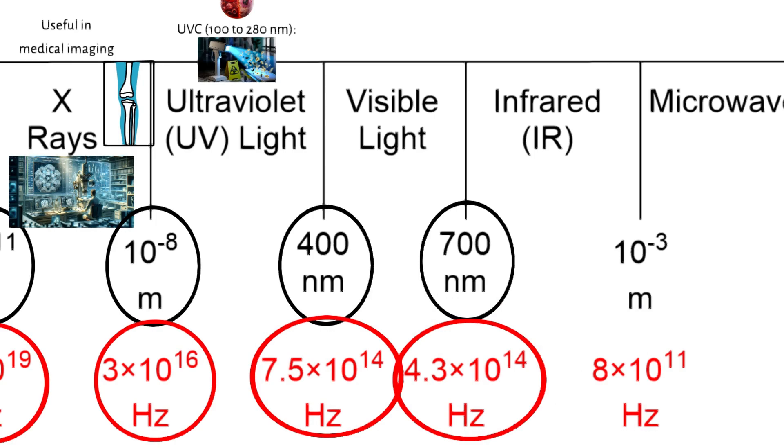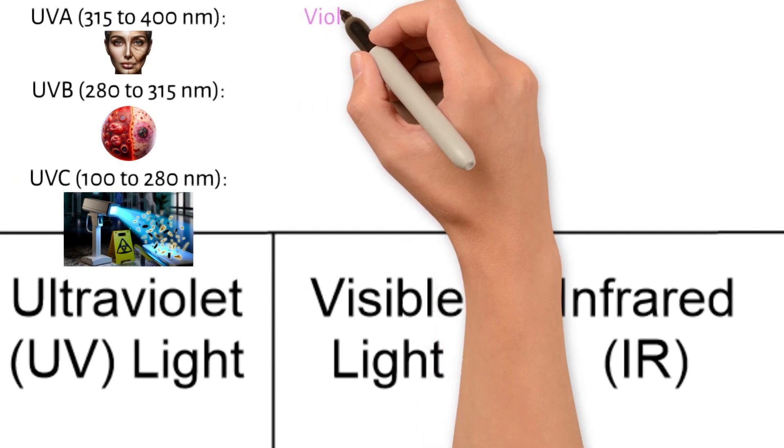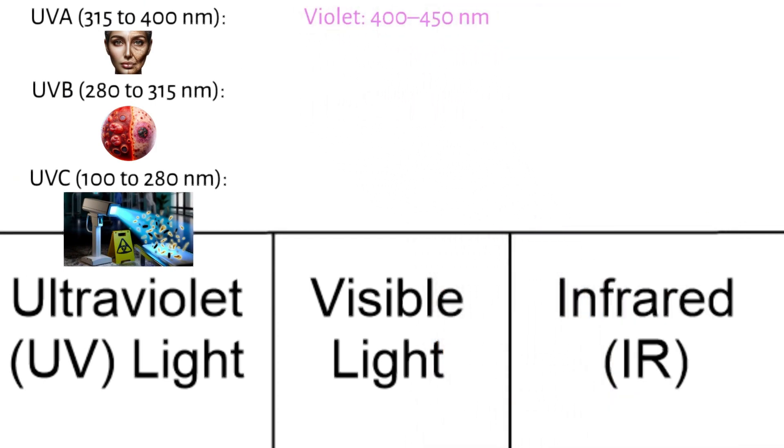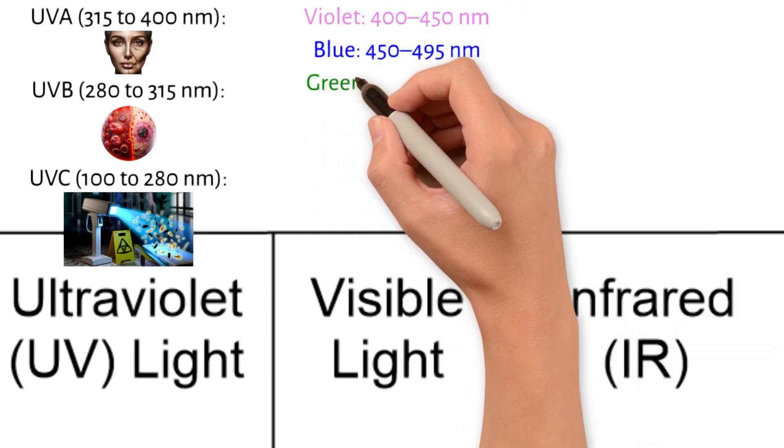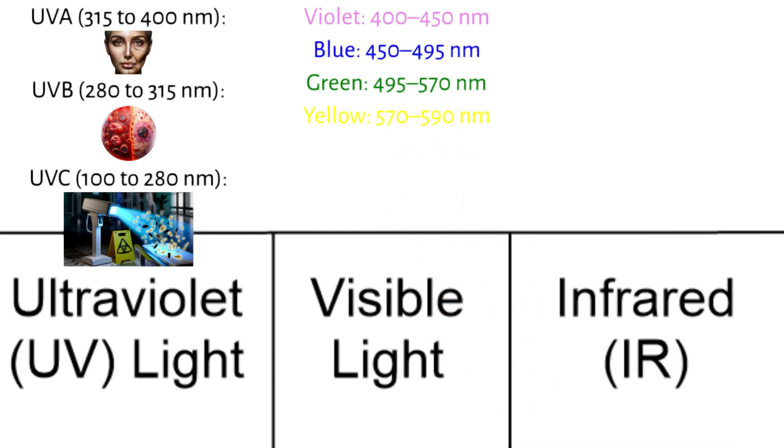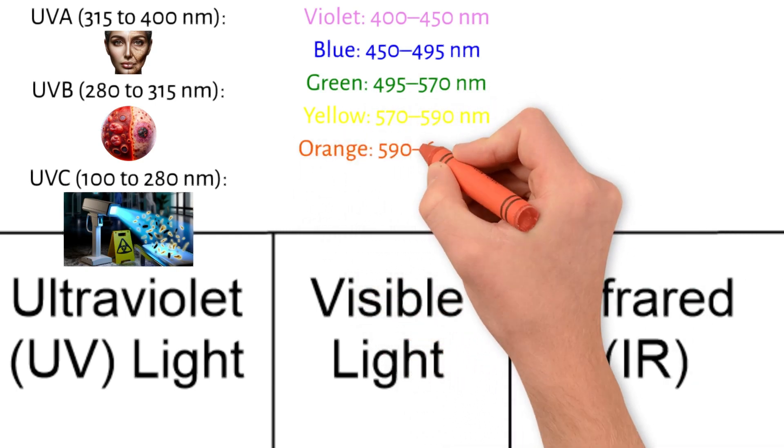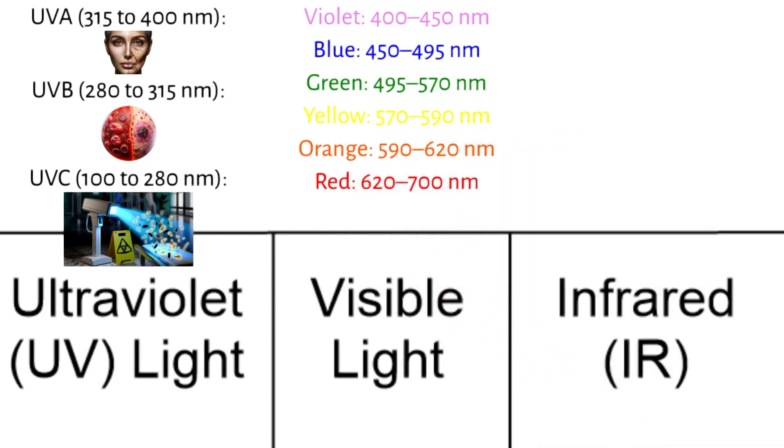The visible spectrum is often divided into colors, each with its own range of wavelength. Violet is 400 to 450 nanometers, blue 450 to 495 nanometers, green 495 to 570 nanometers, yellow 570 to 590 nanometers, orange 590 to 620 nanometers, and red 620 to 700 nanometers.